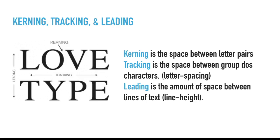Next would be some rules of thumb. First are the spacings of letters and words. We have kerning — the space between letter pairs, like the space between the O and the V in the word 'love.' For tracking, it's the space between all the letters in a certain word — in CSS we call that letter spacing.